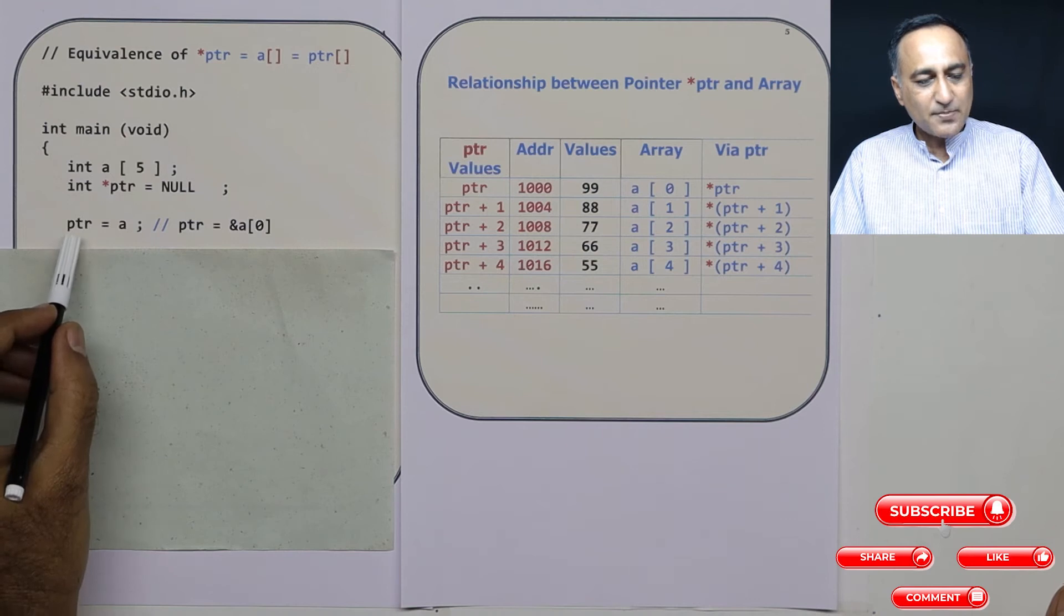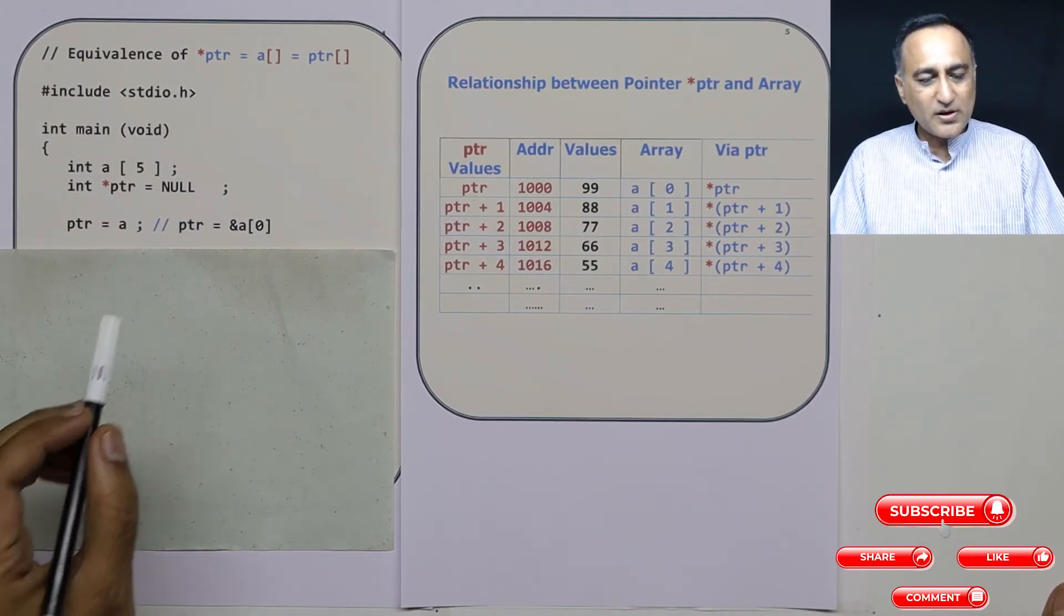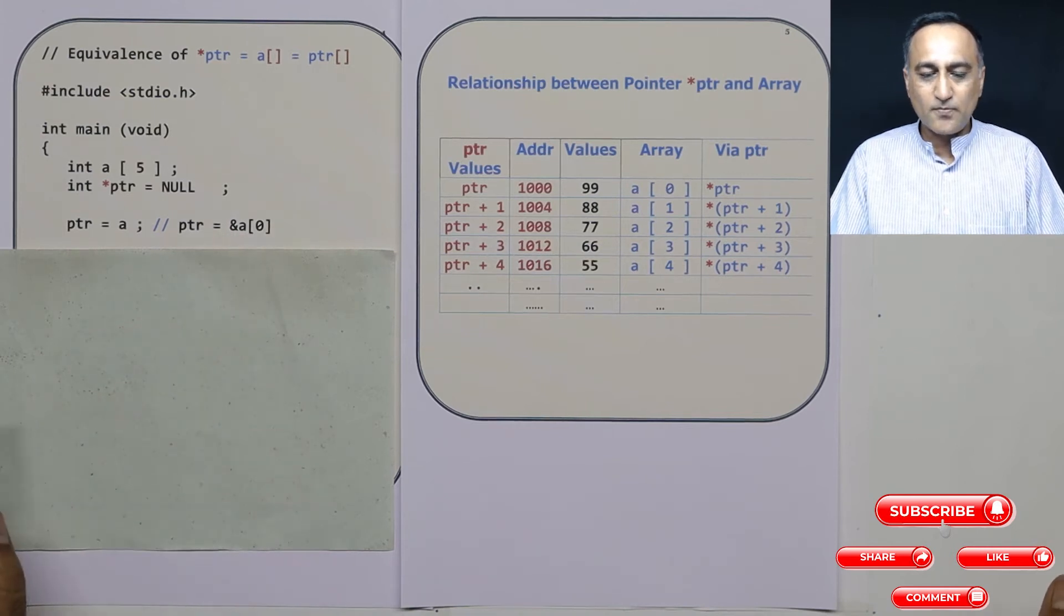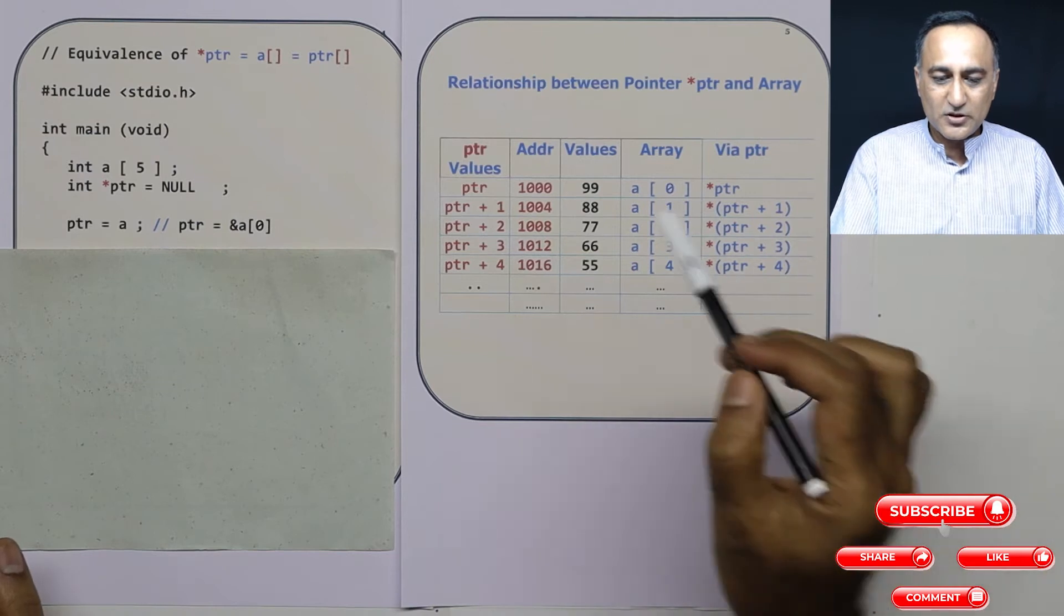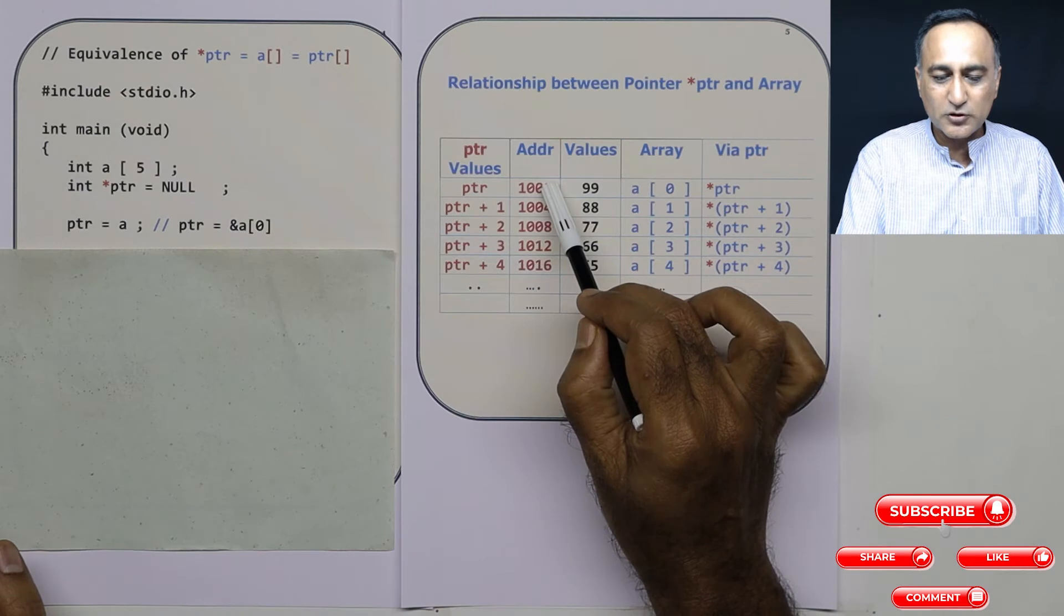In the next step I have said ptr is equal to a. What actually internally is happening is ptr is given the address of a[0]. What is the address of a[0]? It is 1000. So if I print ptr now it is going to print 1000.